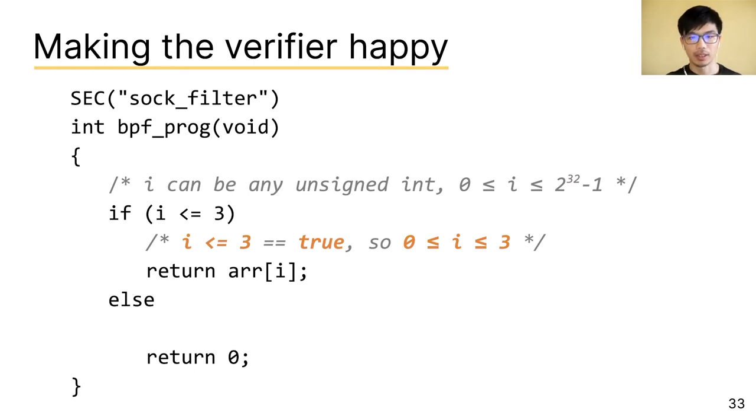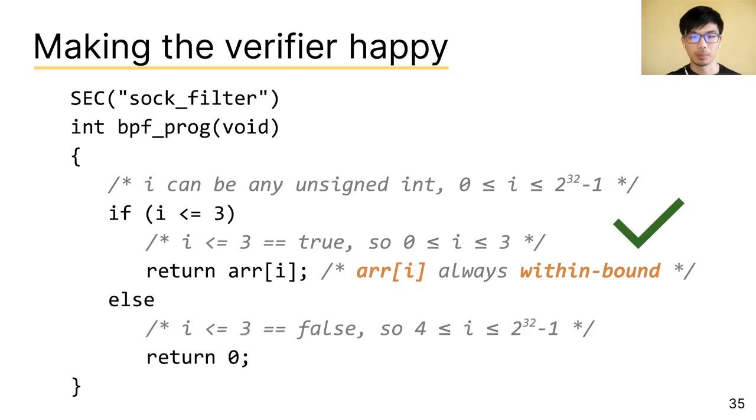But inside the if statement, it can reason that since i is less than or equal to 3, i can only be a value between 0 and 3. In this way, it can be sure that array access with i is always within bounds. And therefore, the program is safe.